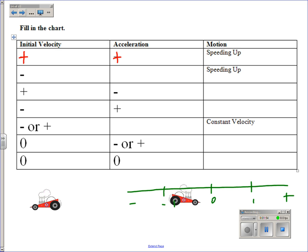If I have an object that's moving to the left, it would have a negative velocity, and if it has a negative acceleration, in other words that the velocity and the acceleration are in the same direction, then the object will be speeding up but traveling to the left.